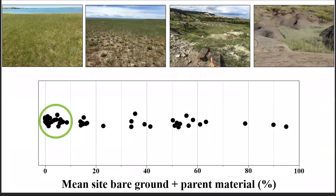Moving on to the results. This chart shows the results of our bare ground survey, with each dot representing a site. The normal prairie sites, indicated by the green circle, have very little bare ground, and as expected, the barren sites tended to have much more bare ground than normal prairies.